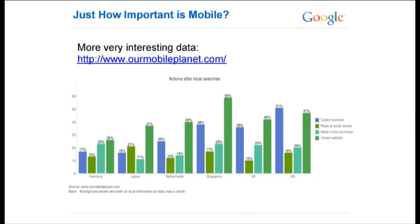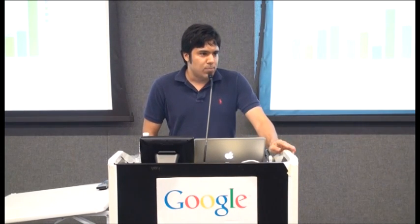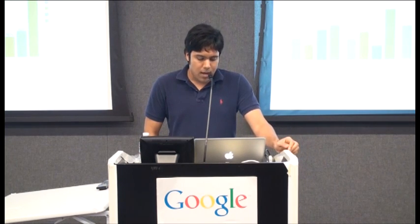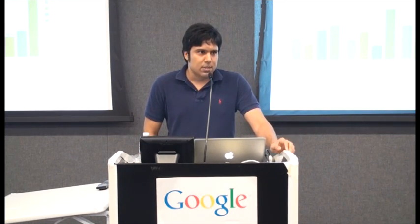There's a really great website, ourmobileplanet.com. Google is a partner of that, along with other companies who provide their data there. This is a graph tracking different actions users take after performing a local search and which percentages take what actions. For example, in the US about 51% of users who perform a local search will end up calling the business afterwards. That speaks both to location extensions for local search and mobile extensions for the click-to-call.